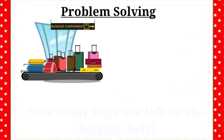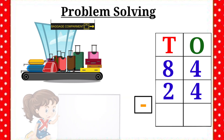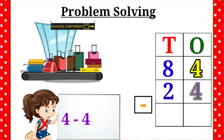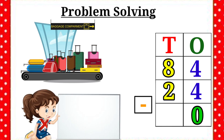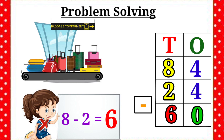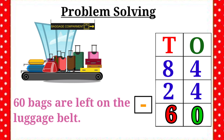Very good. Now we are going to write the given numbers in their correct places. 4 minus 4 is equal to 0. Let's write the number 0 in the 1's place. Then subtract the 10's place. 8 minus 2 is equal to 6. Here we will write the number 6. Therefore, the answer is 60 bags are left on the luggage belt.